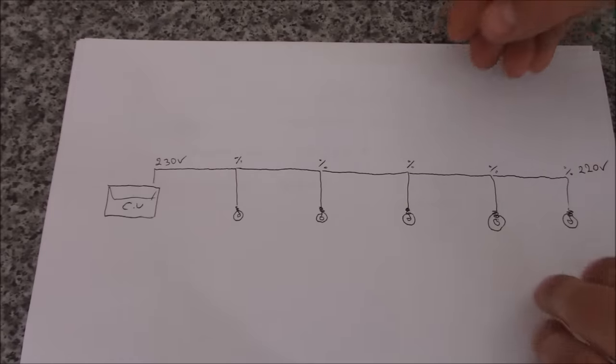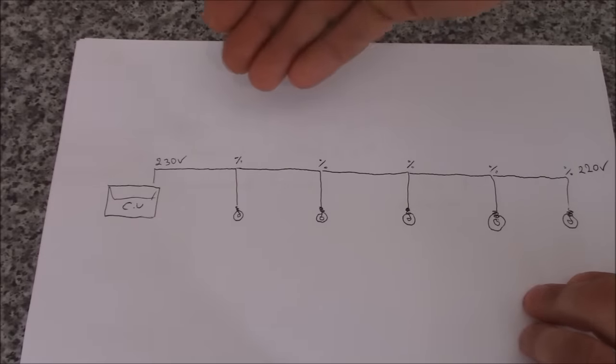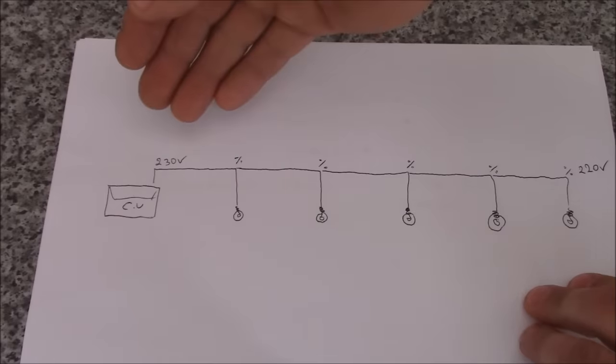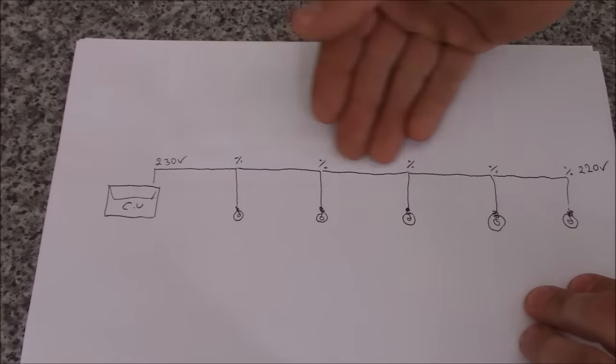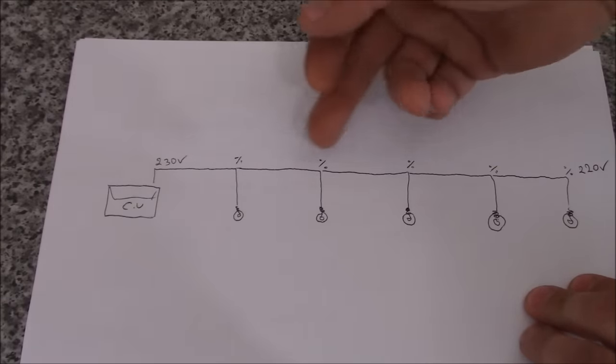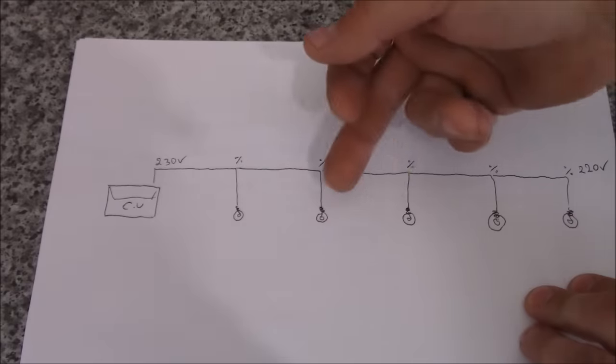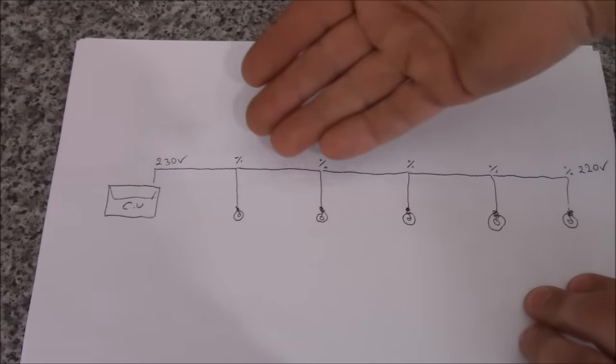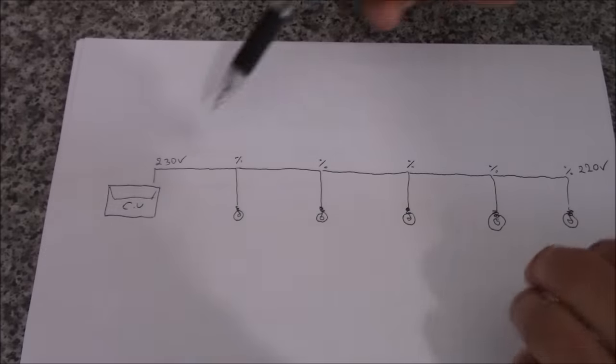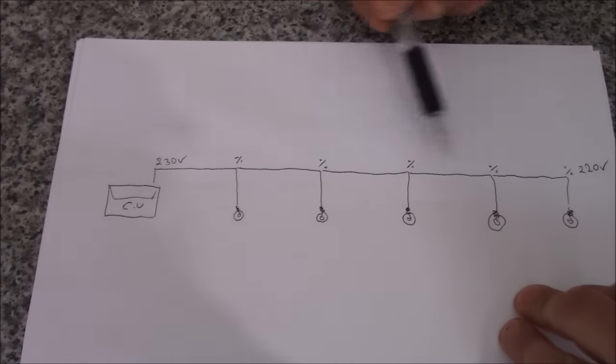And the voltage drop. So the voltage drop or voltage loss occurs in every circuit. And it just depends on the length of the cable that's on the circuit and obviously from the items or bulbs that are connected to the circuit.